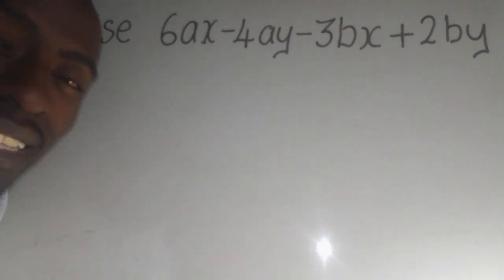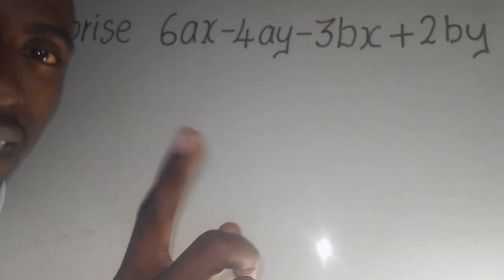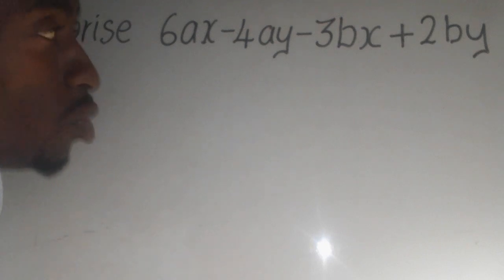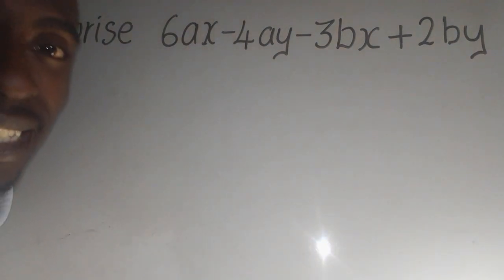Now, the first step for you to answer this question, you need to check if we have the similar terms. As you can see, here we have A, even there we have A. The next thing is you need to check the numbers. Do you have any number which can go into 4 and 6? Yes, it is 2.